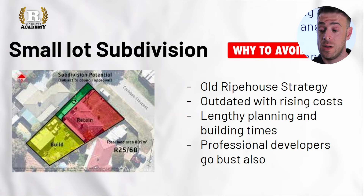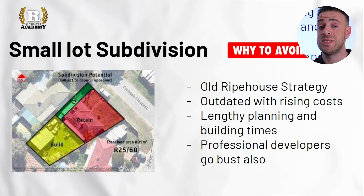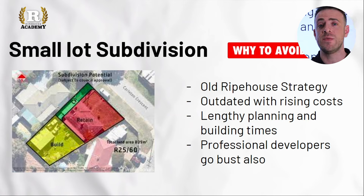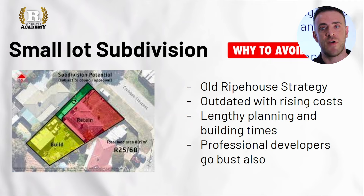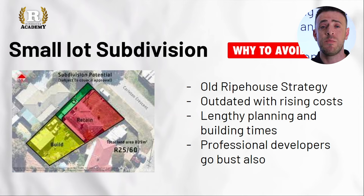Small lot subdivisions can still be profitable — more so in million-dollar-plus suburbs — but the cost of subdivision and new builds has increased over 50% post-COVID and is still trending higher. This used to be a strategy we went down as a business — the 'battle axe block' strategy: large block, property at the front, subdivide the rear, renovate the front to hold value, and sell or build at the back. In the current market it's not quite valuing up.